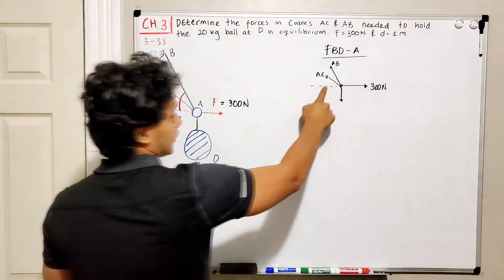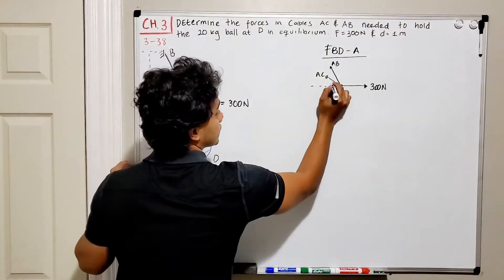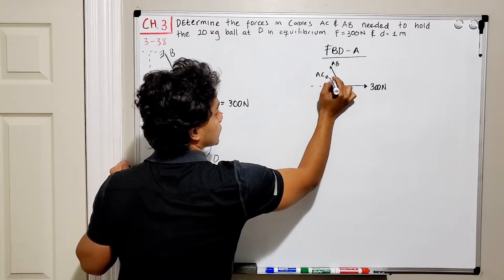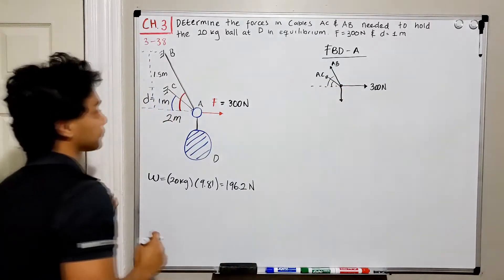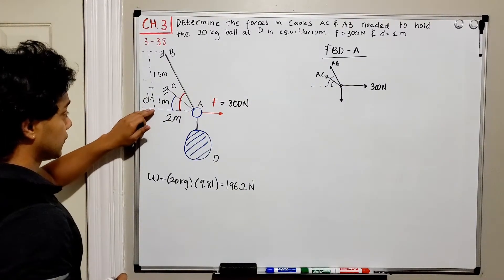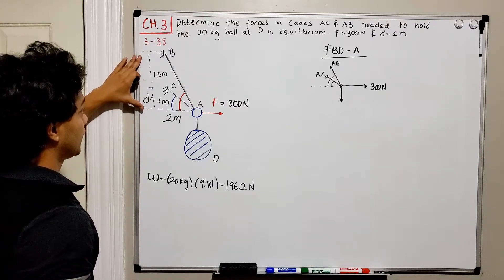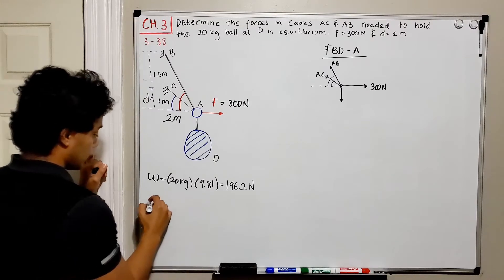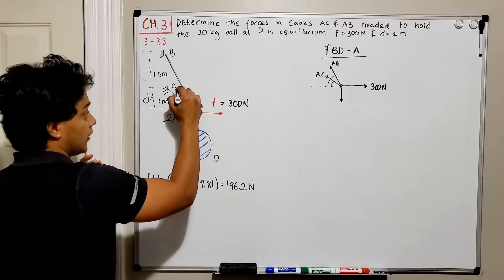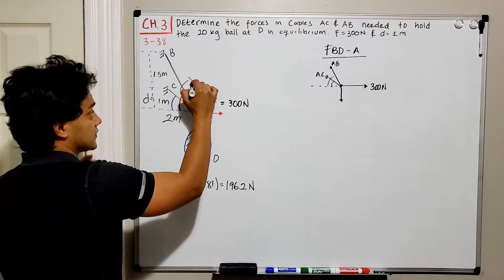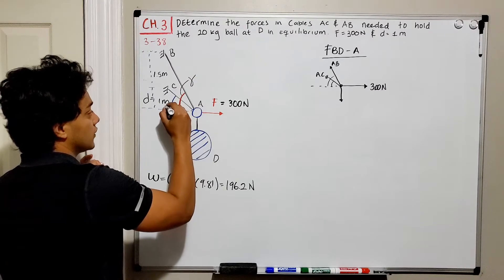In order to know the angle of these guys, of AC and also the angle for AB, we need to find them with respect to the height of these cables. So let's call this red angle gamma. And the blue one is going to be theta.